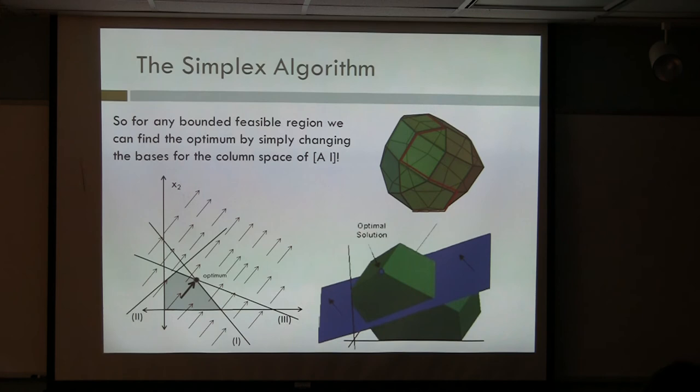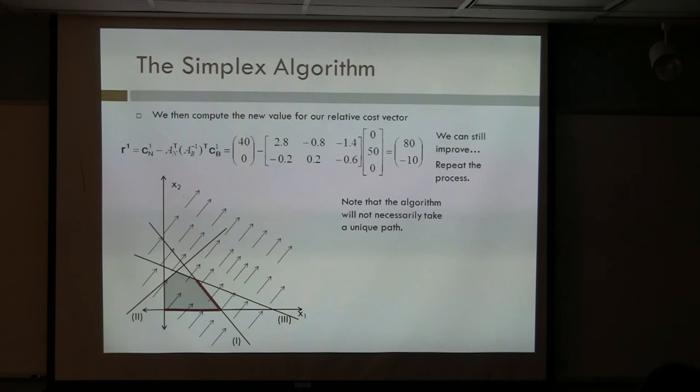And then we compute the function every time. The way you determine if you stop is if there are no positive values in your R vector — in your relative cost vector. So if the relative cost vector was negative 80, negative 10, you stop the algorithm. There's no improvement that can be made.